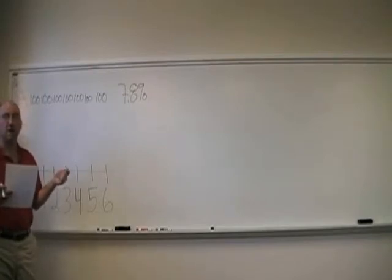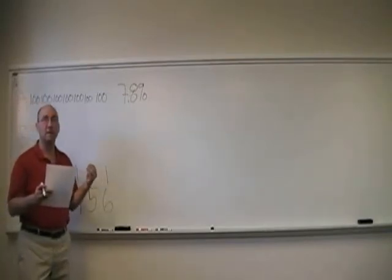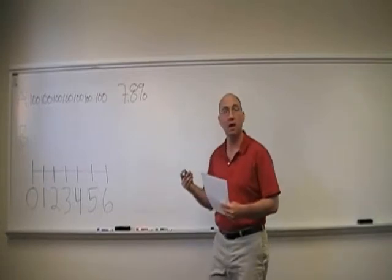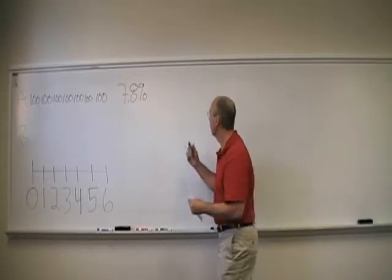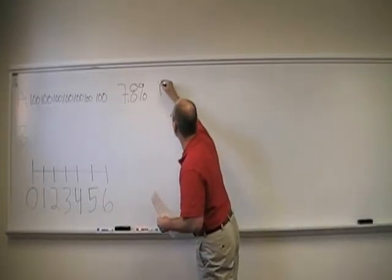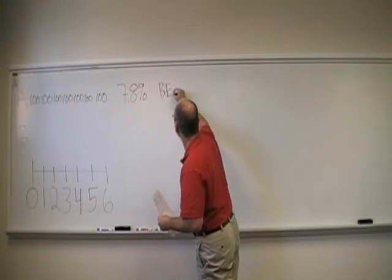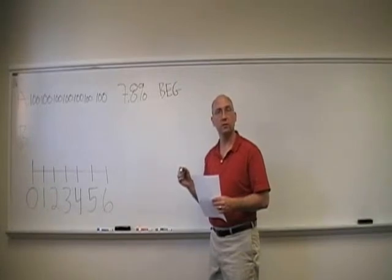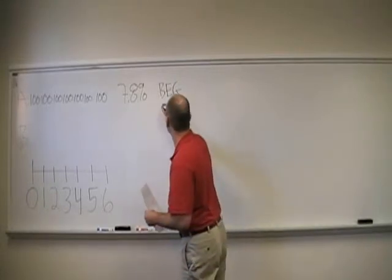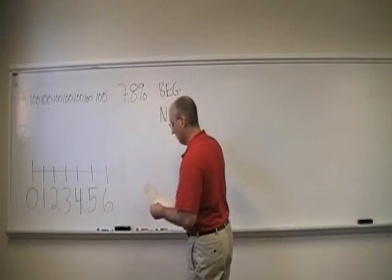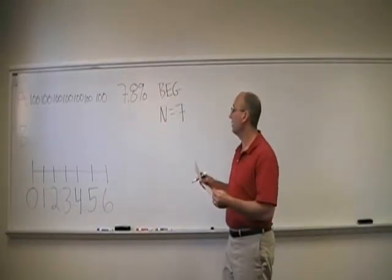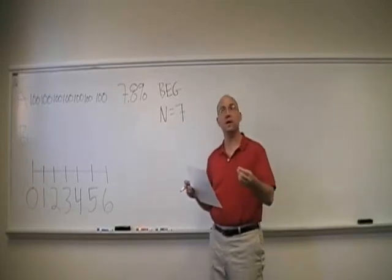And we can figure out the value of this as the value of a seven period annuity due. So because it's an annuity due, or because the first payment is today, we'll want to put it in begin mode. We'll want to tell it n is equal to seven, because there are seven payments, and by telling it begin mode, the calculator knows the first one is today, the second's in a year, the third one's in two years, and the last one, the seventh one, is actually in six years, which corresponds to our timeline.